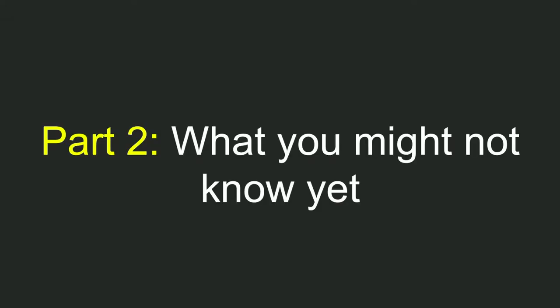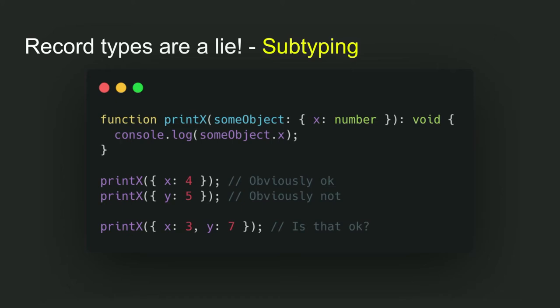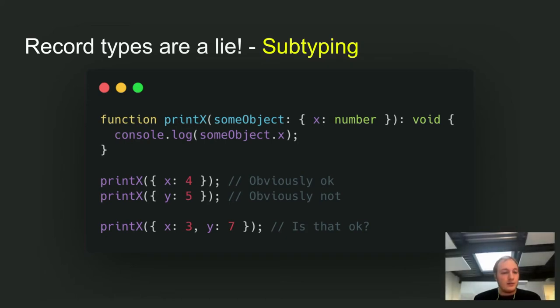This was all the pretty easy part. And you notice I left out records pretty much completely. Because there it gets a bit more interesting and that you might not know about this. So for the first thing, record types are a lie. So here I have a function that is pretty simple. It takes an object that has an x field of type number and prints that to the console. And you see down there, if you try to print just the value of four, that's obviously okay. If you pass in something with a y, this is obviously not okay. But the last case is a bit more interesting. It has an x but also a y. Do you think this is allowed in TypeScript? Just think for a bit and make a mental note.